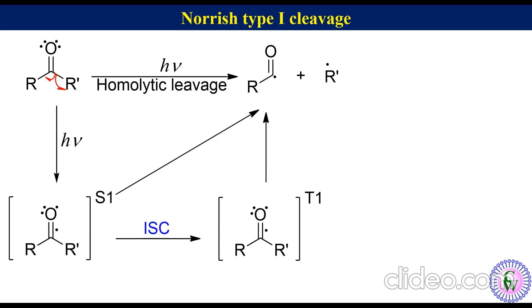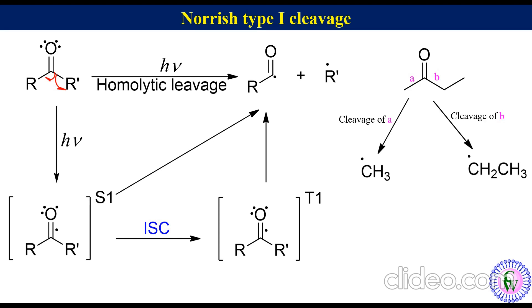In the substrate, there are two C-C sigma bonds alpha to the carbonyl, but the bond which after cleavage gives the more stable alkyl radical gets preferably broken. For example, 2-butanone has two C-C sigma bonds alpha to the carbonyl: bond A and bond B. Cleavage of A gives a methyl radical, while cleavage of B gives an ethyl radical. Since the ethyl radical is more stable than the methyl radical, bond B of 2-butanone will cleave preferably, giving rise to the more stable ethyl radical.